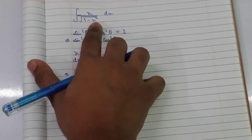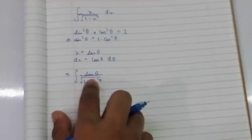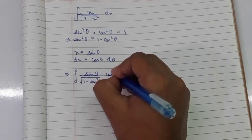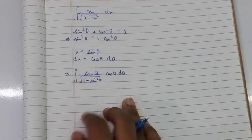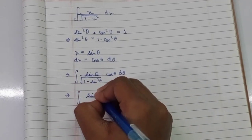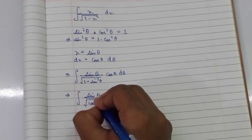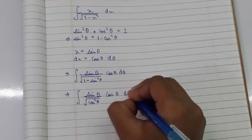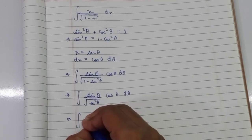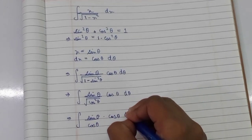Under the square root we have 1 minus sine squared theta, and dx is cosine theta d-theta. So the integral becomes: sine theta over the square root of cosine squared theta, times cosine theta d-theta. This simplifies to the integral of sine theta over cosine theta times cosine theta d-theta.